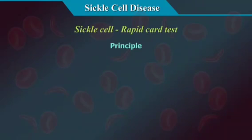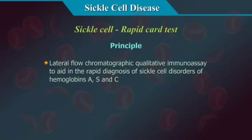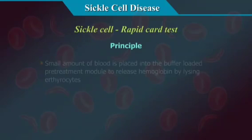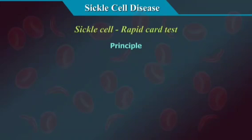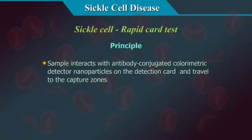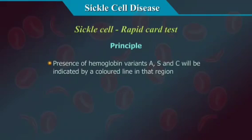The Sickle Scan Test is a lateral flow chromatographic qualitative immunoassay to aid in the rapid diagnosis of sickle cell disorders of hemoglobins A, S, and C. A small amount of blood is placed into a buffer-loaded pre-treatment module to release hemoglobin by lysing the erythrocytes. The sample interacts with antibody-conjugated colorimetric detector nanoparticles on the detection card and travels to the capture zones. The presence of hemoglobin variants A, S, and C is indicated by a coloured line in that region.